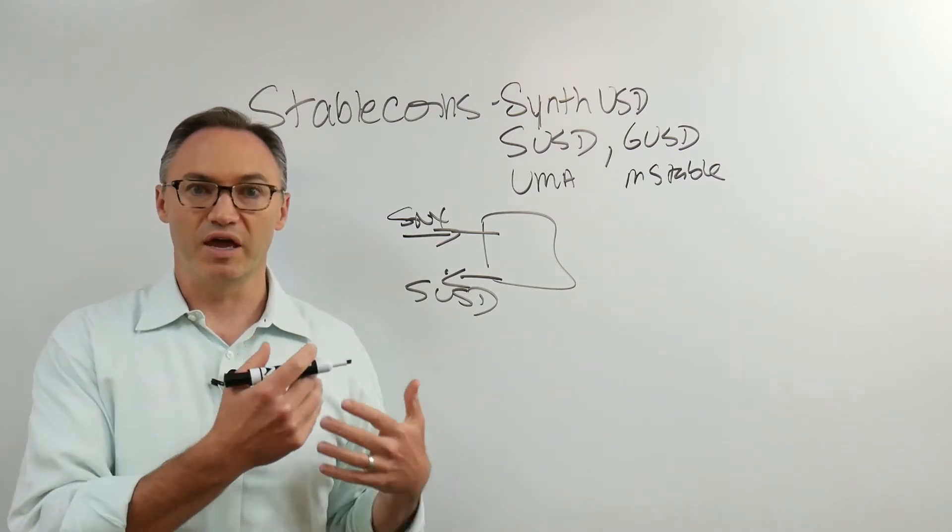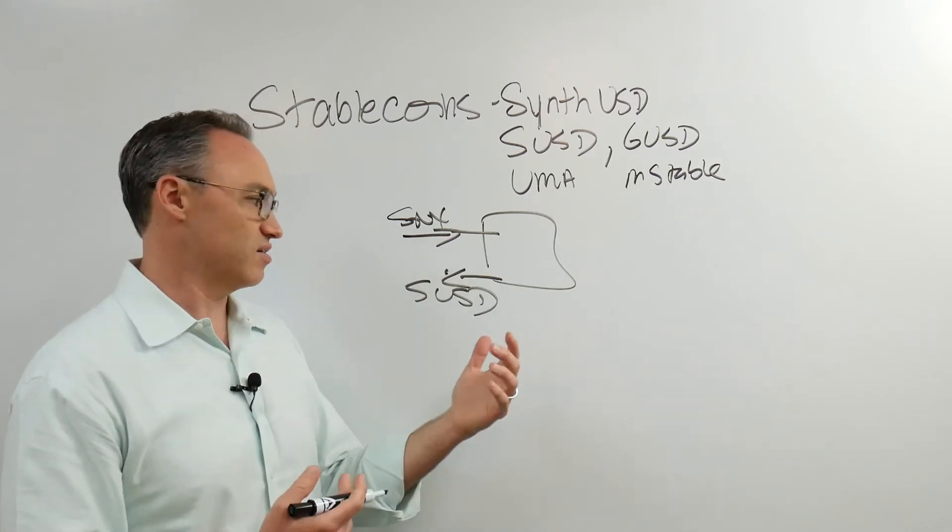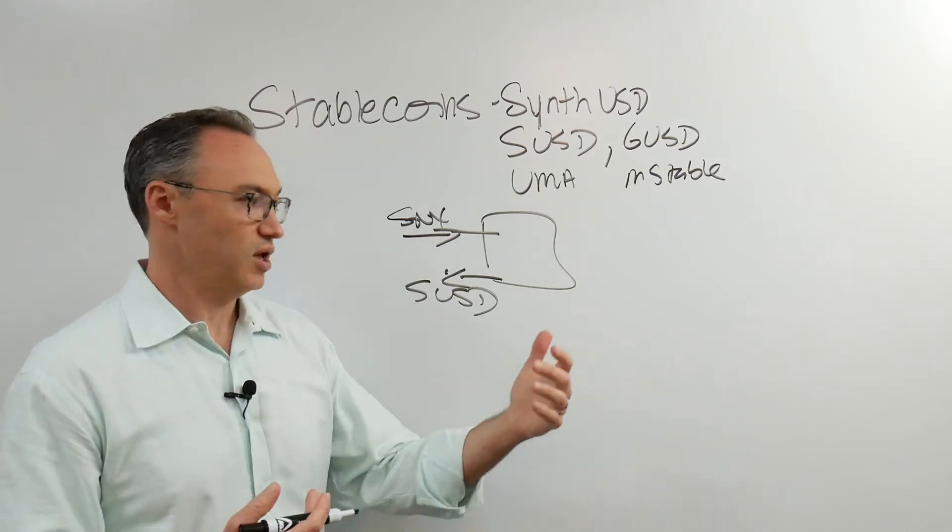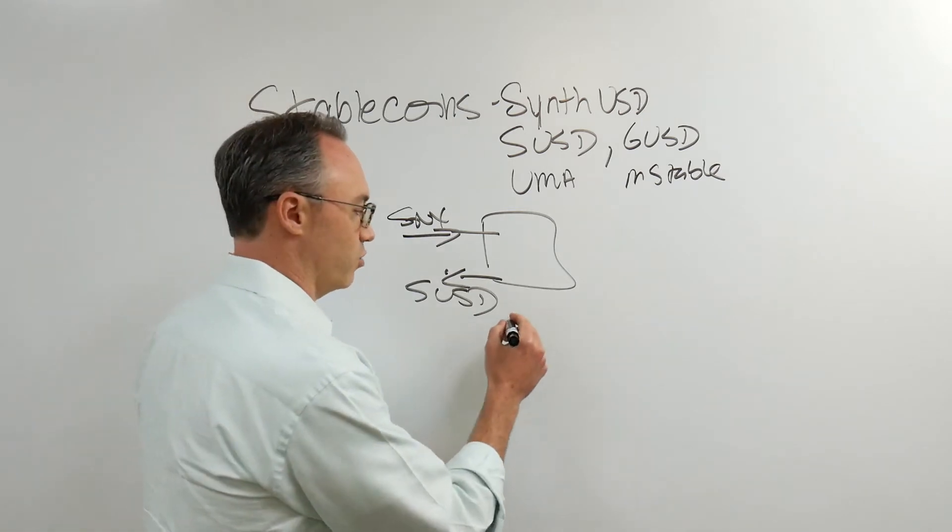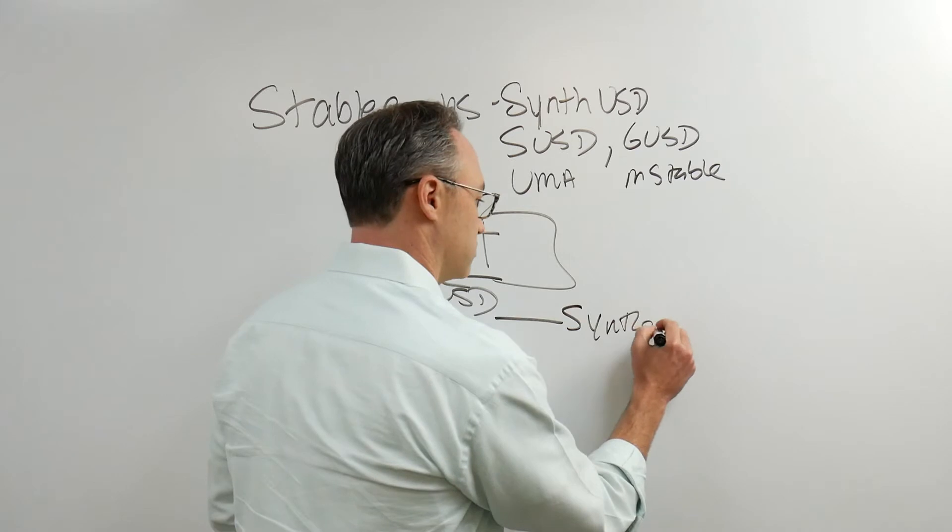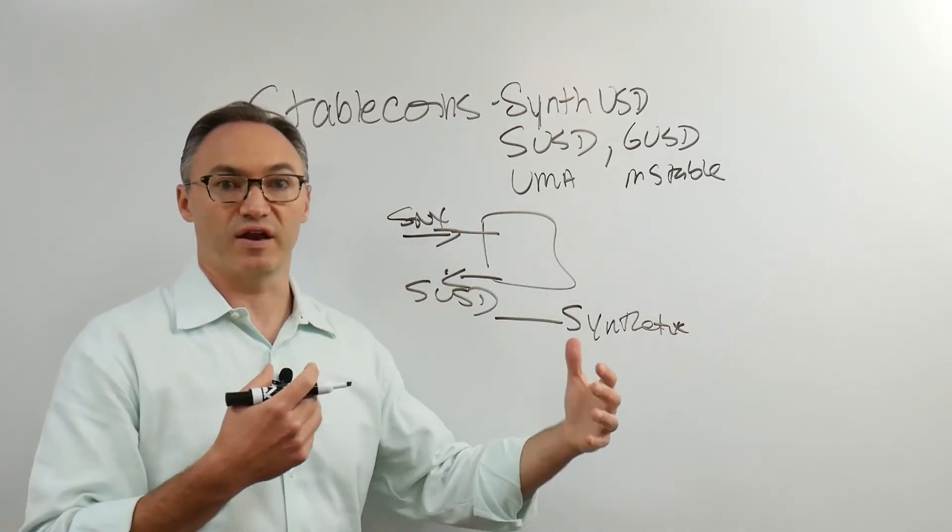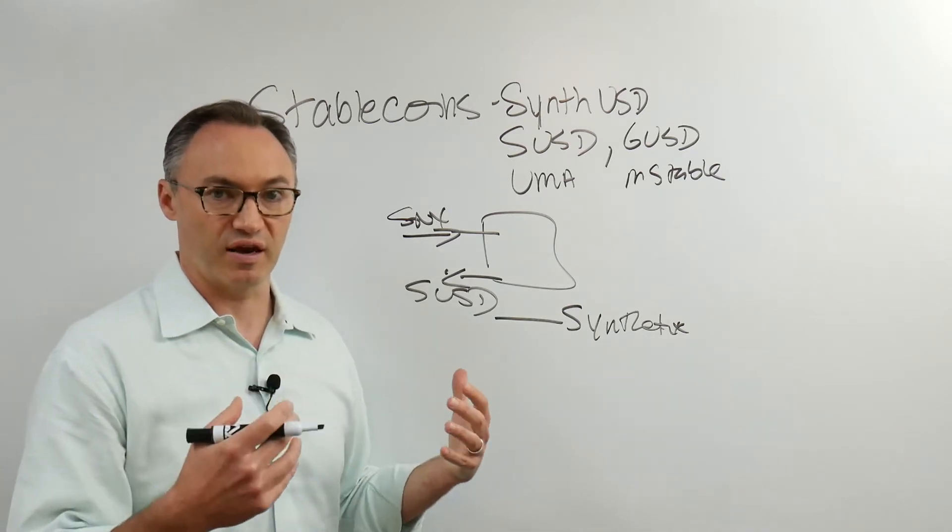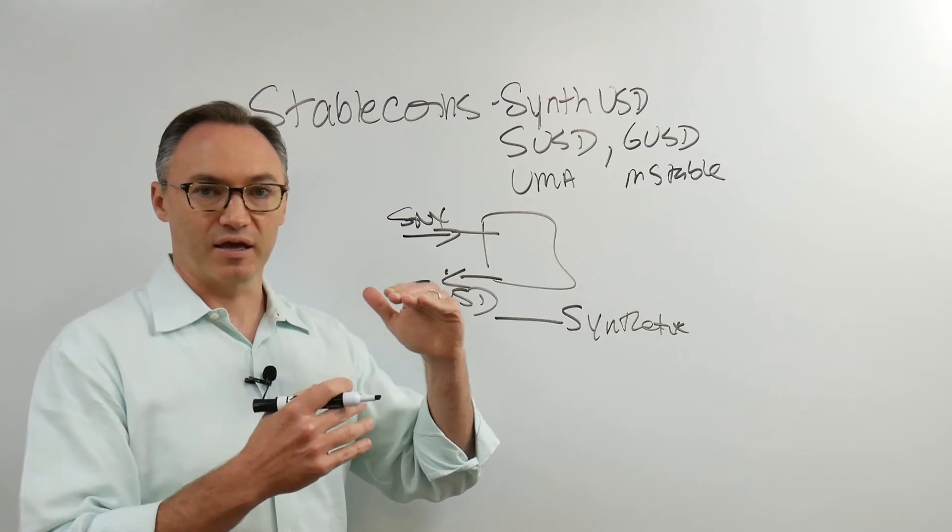Why do they want me to do that? I'm minting the SUSD based on whatever SNX tokens are worth at the 750% collateralization ratio, much like MakerDAO with their 150% collateralization. This has 750% at the time, and I mint SUSD.